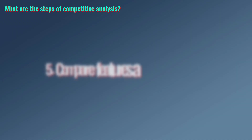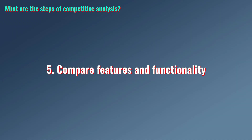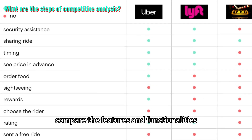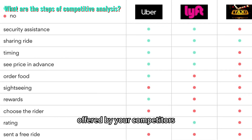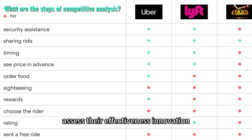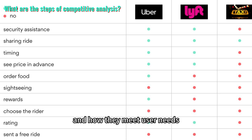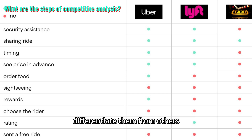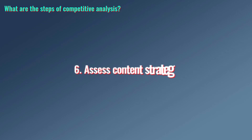Identify strengths and weaknesses in their designs and how they align with user expectations and industry standards. Step 5: Compare features and functionality. Compare the features and functionalities offered by your competitors. Assess their effectiveness, innovation, and how they meet user needs.